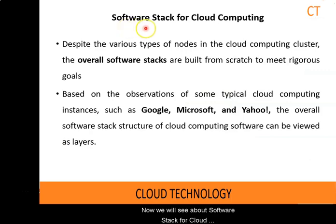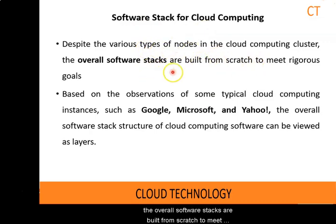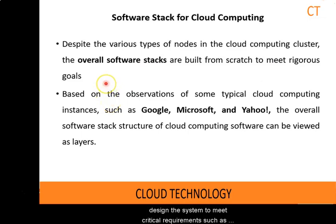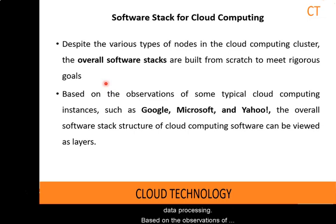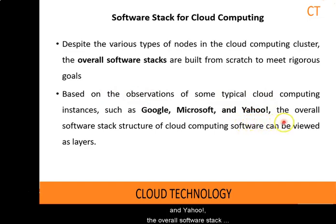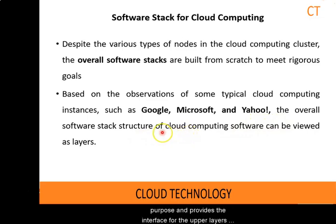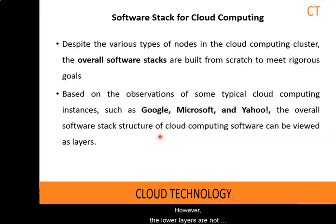Now we will see about the software stack for cloud computing. Despite the various types of nodes in the cloud computing cluster, the overall software stacks are built from scratch to meet rigorous goals. The developers have to consider how to design the system to meet critical requirements such as high throughput, high availability and fault tolerance. Even the operating system might be modified to meet the requirements of cloud data processing. Based on observation of typical cloud computing instances such as Google, Microsoft and Yahoo, the overall software stack structure can be viewed as layers. Each layer has its own purpose and provides the interface for the upper layer, just as the traditional software stack does. However, the lower layers are not completely transparent to the upper layers.